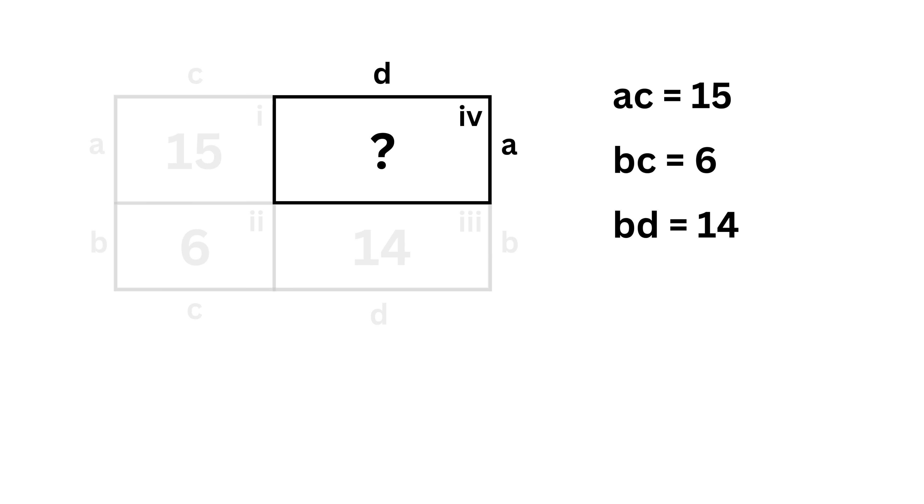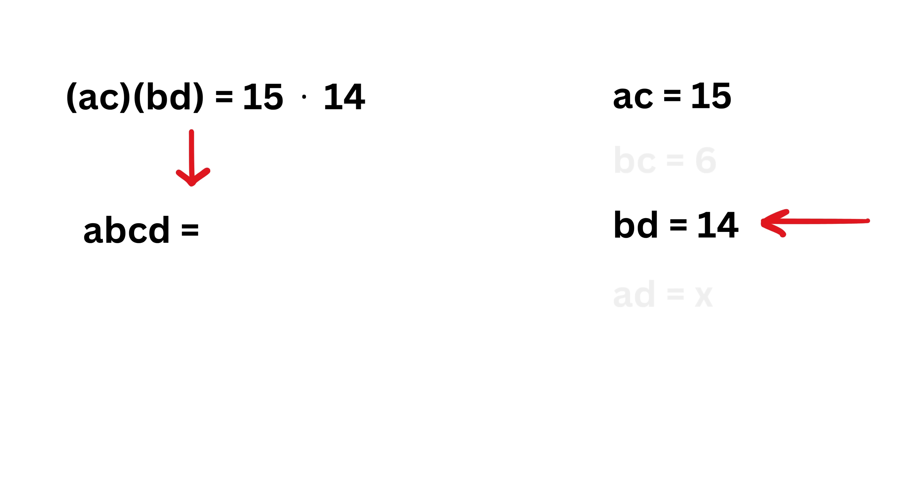Now for portion 4, we need to find its area, which will be equal to A times D. Let us call this product AD as X. Let us multiply this equation with this equation. So from here, we get AC multiplied by BD, which equals 15 times 14. So this gives A times B times C times D equals 15 times 14.